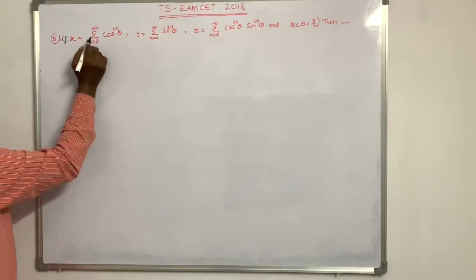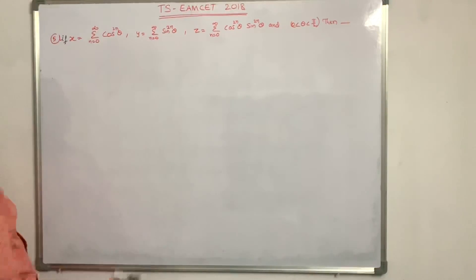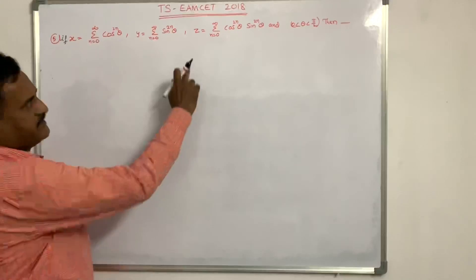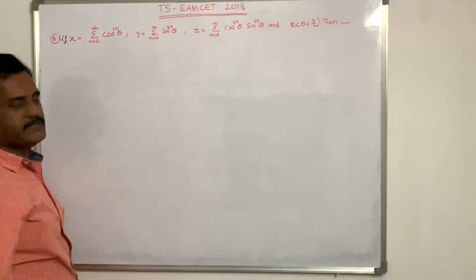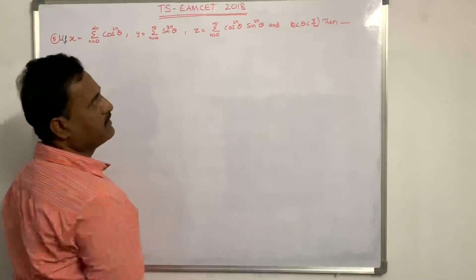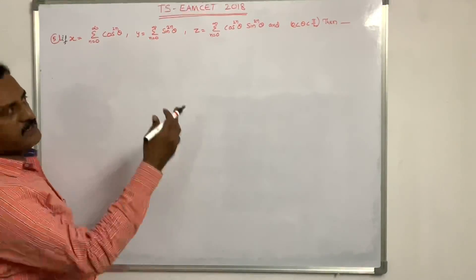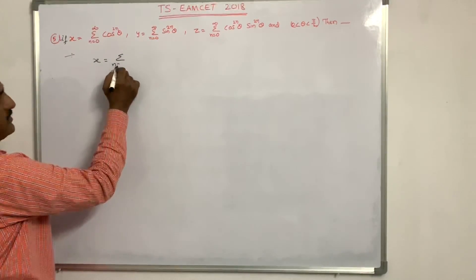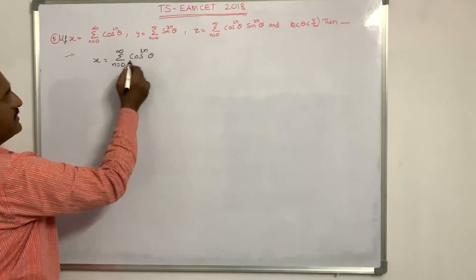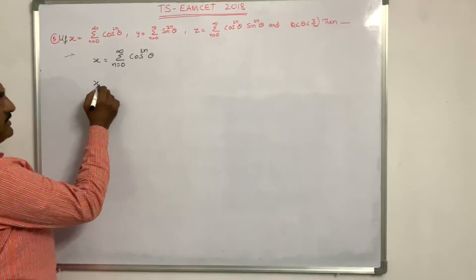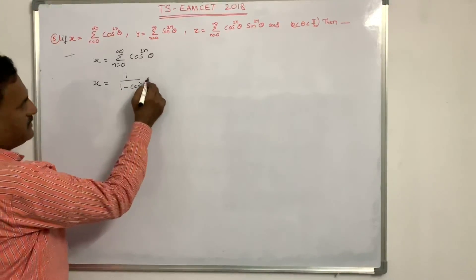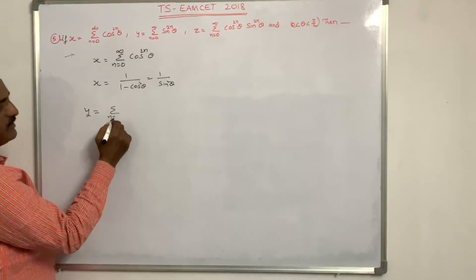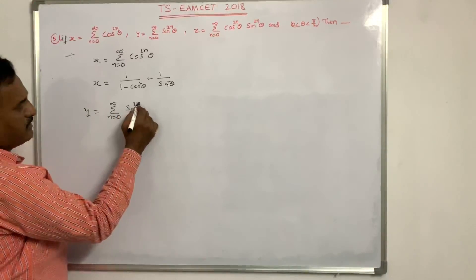Fifth problem: if x equals sigma from n equals 0 to infinity of cos to the power 2n theta, and y equals sigma from n equals 0 to infinity of sin to the power 2n theta, where 0 less than theta less than pi by 2, find the relation. x is an infinite geometric series equal to 1 by 1 minus cos squared theta, which is 1 by sin squared theta.